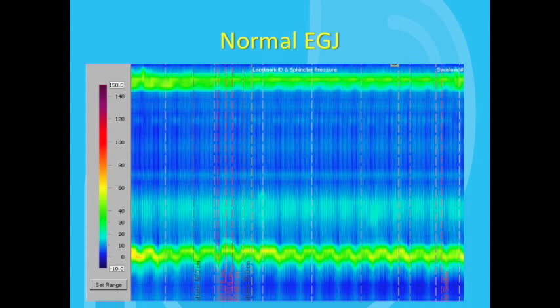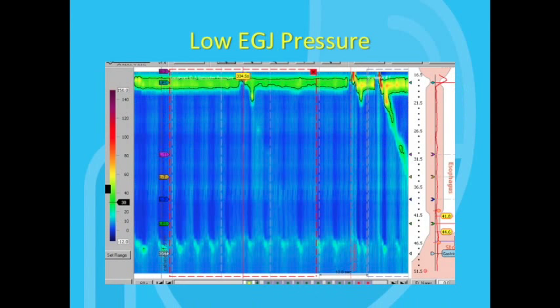In our lab, the normal EGJ resting pressure is between 10 and 45 millimeters of mercury. Here's an example in this slide of an EGJ resting pressure that is low, in this case, 5 millimeters of mercury.